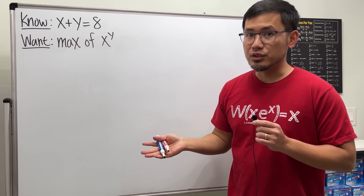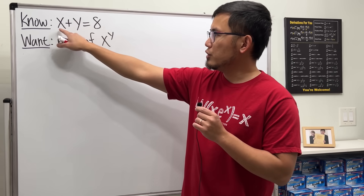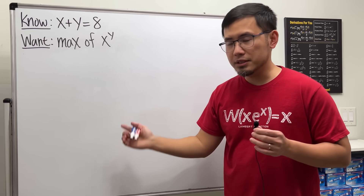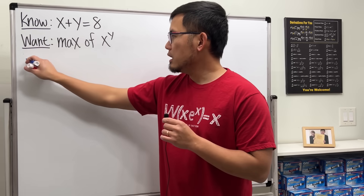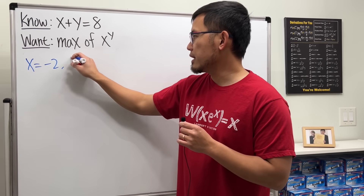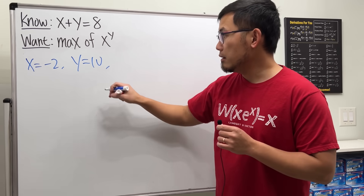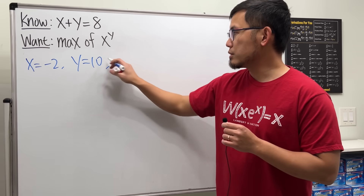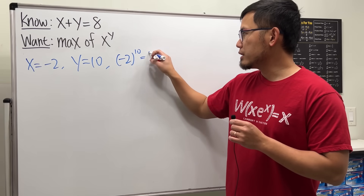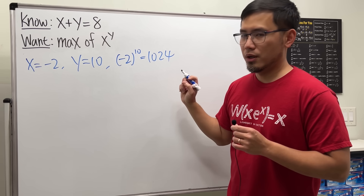Let's make some observations first. If there's no conditions on x and y, we can do this. Let's say x is equal to negative 2. In that case, y would just equal 10. And then we are just talking about negative 2 to the 10th power. Work that out, we get 1024.